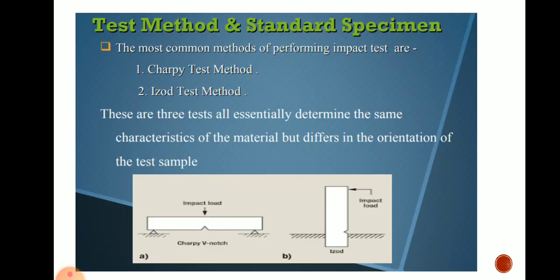There are two standard test methods for impact testing. The first and most common method is the Charpy test, and the second is the Izod test. There is not too much difference between the two tests since both determine the same characteristics — toughness and impact energy — but they differ in the orientation of the test sample. In the Charpy test, the specimen is placed horizontally, whereas in the Izod test, the specimen is placed vertically. These two tests will be seen in detail in the next video.